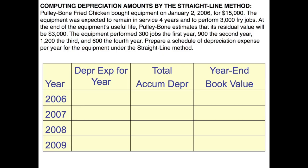Let's look at an example — we'll use the same example in later videos when talking about other methods of depreciation. Pulleybone Fried Chicken bought equipment on January 2nd for $15,000. The equipment was expected to remain in service for four years and perform 3,000 fry jobs. At the end of its useful life, Pulleybone estimates the residual value will be $3,000. The equipment performed 300 jobs the first year, 900 the second year, 1,200 the third year, and 600 the fourth year. Prepare a schedule of depreciation expense per year under the straight-line method.